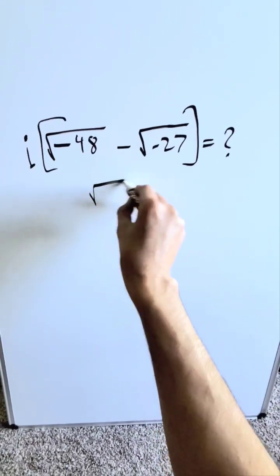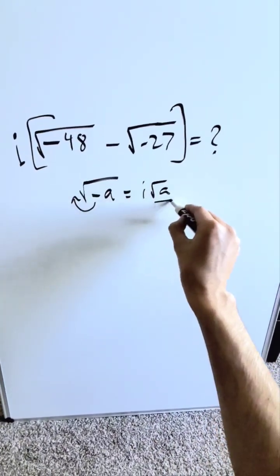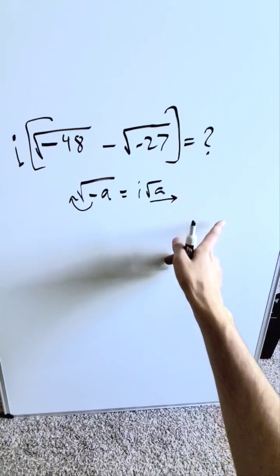Keep this property in mind. Square root of minus a, minus comes out as an i, and then root a. You can simplify this further if you can do it.